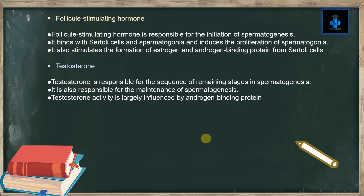Testosterone is responsible for the sequence of remaining stages in spermatogenesis. It is also responsible for the maintenance of spermatogenesis. Testosterone activity is largely influenced by androgen binding protein.